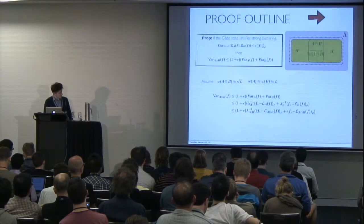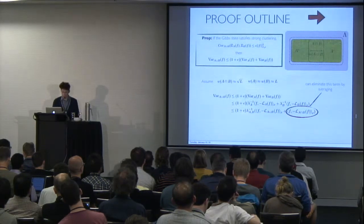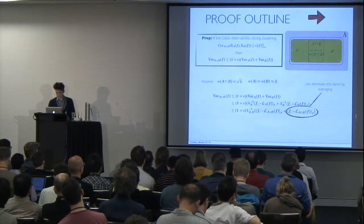And then we're almost done because the spectral gap is simply the supremum over the Dirichlet form divided by the variance. We're left over with this term and you get rid of this by performing some sort of an averaging trick that I don't want to get into the details of.